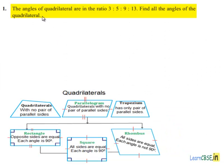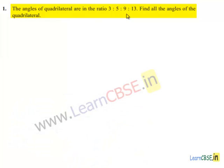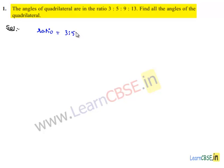Moving on to the first question: the angles of a quadrilateral are in the ratio 3:5:9:13. Find the angles of the quadrilateral. Now moving on to the solution — we are given the ratio of 4 angles of the quadrilateral, that is 3:5:9:13.